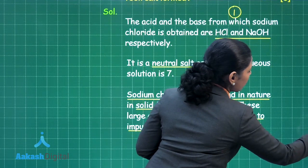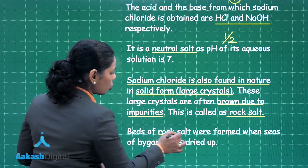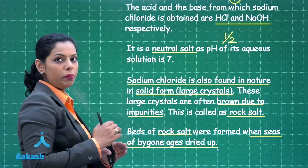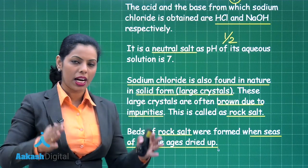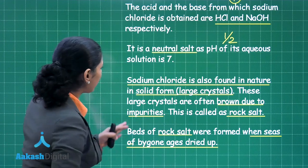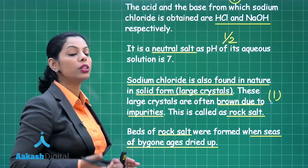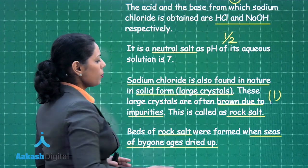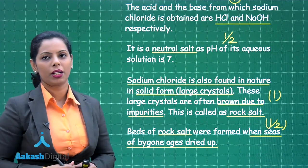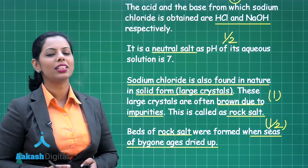How is rock salt formed? Beds of rock salt were formed when seas of bygone ages dried up — meaning seas from the primitive era got dried up and changed into rock salt. Writing the definition of rock salt gives you 1 mark, and explaining how it is formed gives you half mark, totalling 3 marks for question number 7.